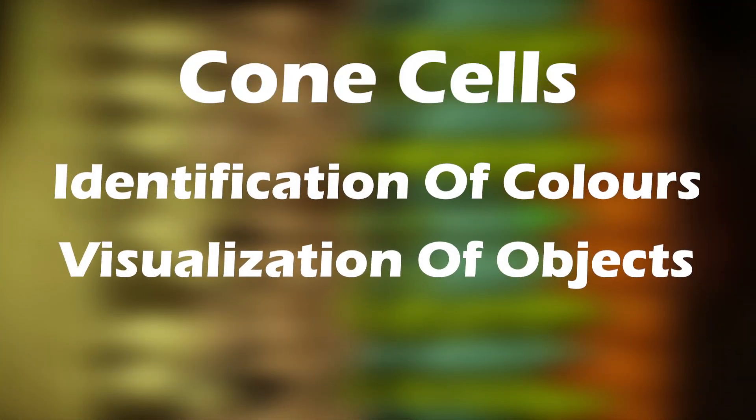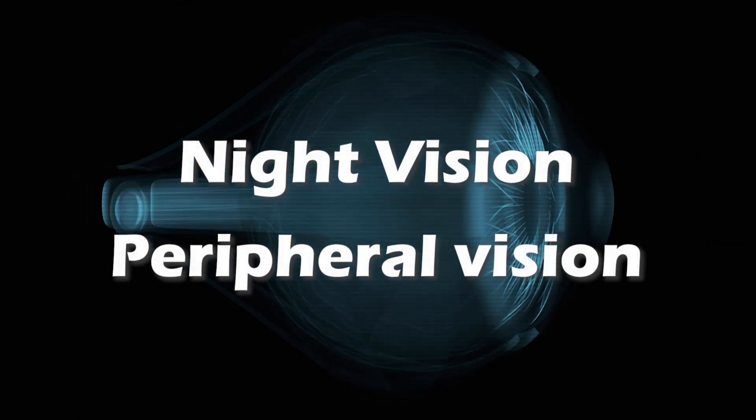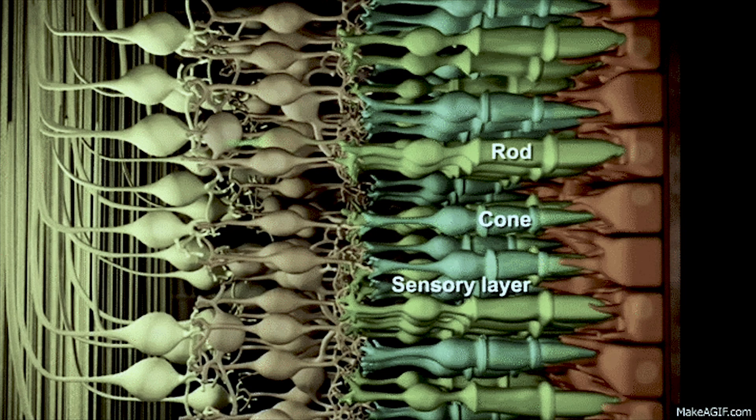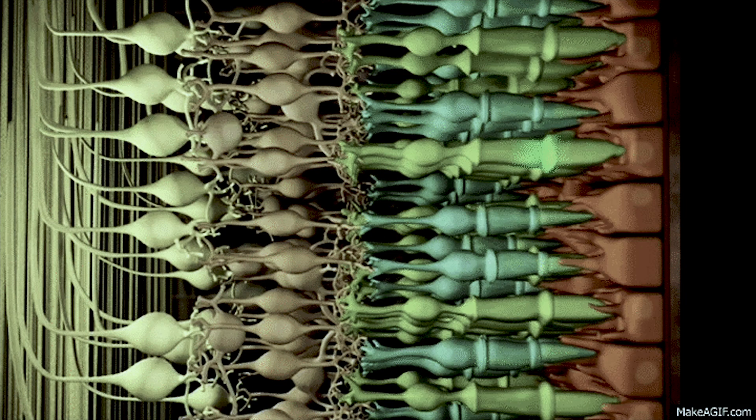The function of cone cells is identification of colors and visualization of objects. Rod cells are responsible for night vision and peripheral vision. Rod cells are more numerous than cone cells and more sensitive to light.